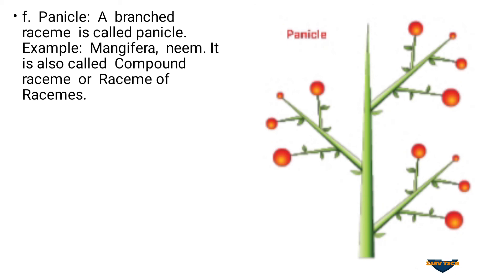Panicle is the same as a simple raceme but with branches, arranged in acropetal succession. Example: Mangifera (mango) and neem. A panicle is otherwise called a compound raceme or raceme of racemes.